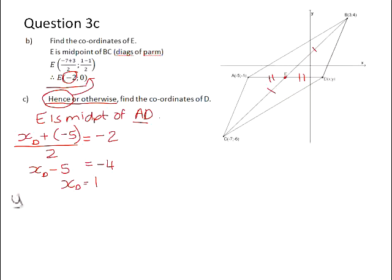We can do the same thing with the y-coordinate. If we were going to be finding the y-coordinate of the midpoint, we would take the y-value of D, we would add the y-value of A, divide it by 2, and we know that that answer is 0. Therefore, y of D will be equal to 1. So therefore, the coordinates of D are 1 and 1.